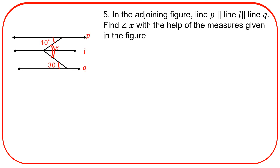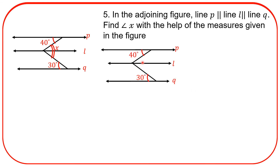Fifth example. This example has been removed from the syllabus, but it is a very interesting example, so we will solve it here. Line P and line L are parallel to each other, and this is a transversal.